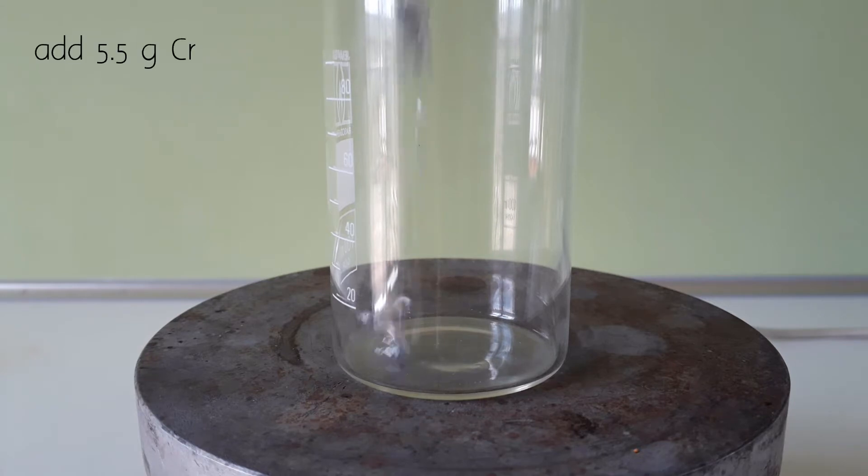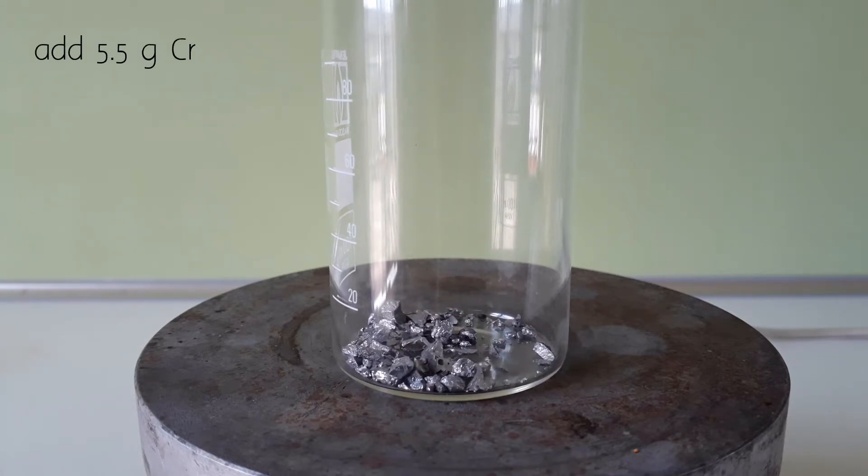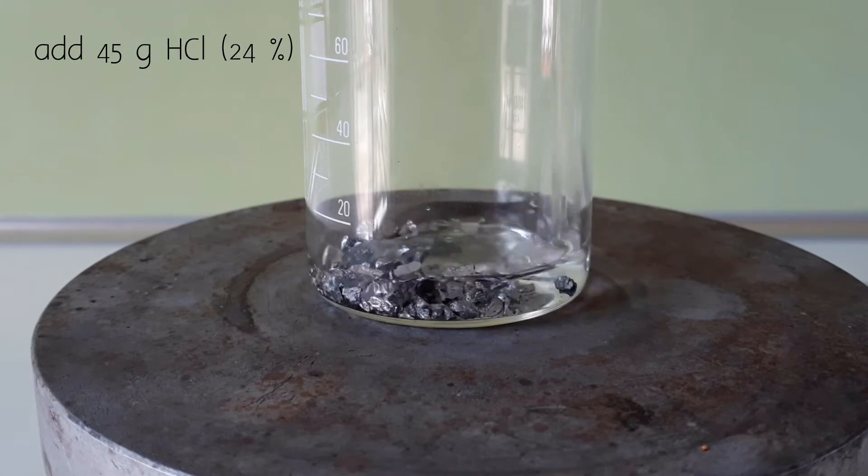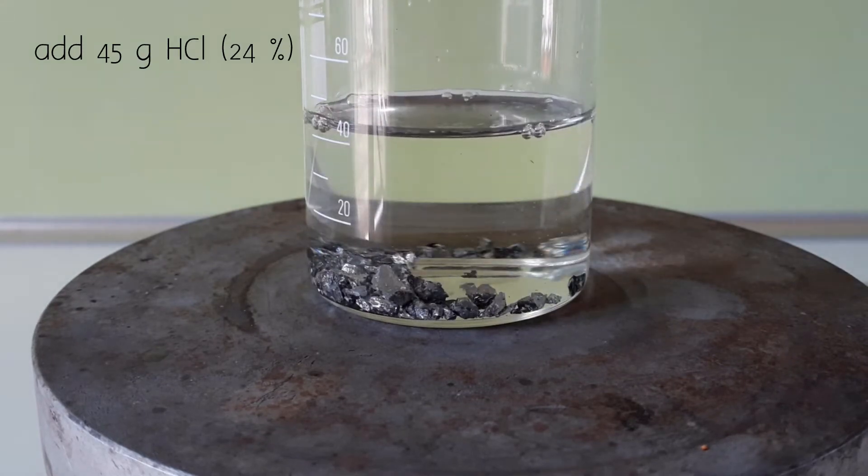To a beaker I add 5.5 grams of chromium metal. This is followed by 45 grams of 24% hydrochloric acid solution.